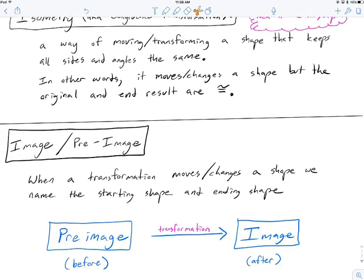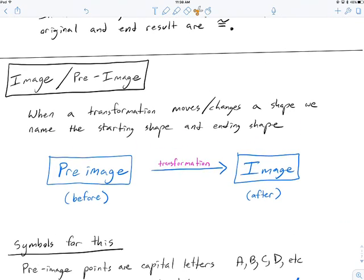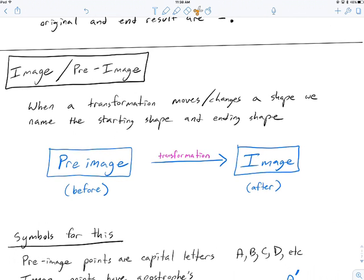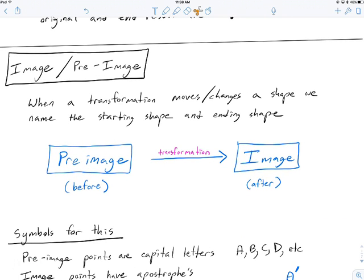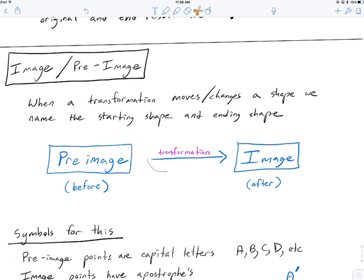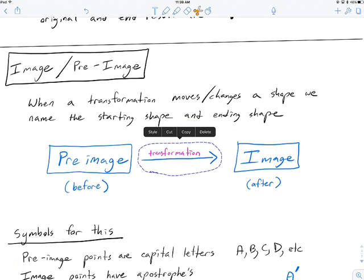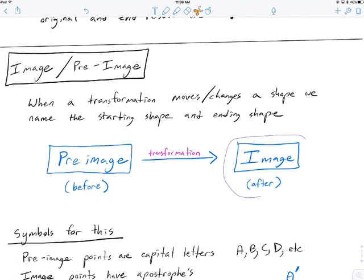Another important piece of vocab is the image and pre-image. The image is what happens after — it's the end result. The pre-image is the original figure. We start with a pre-image — whatever shape on a coordinate plane, a triangle, trapezoid, some polygon — then we do some transformation with it. Today we're talking about translating, so we do a transformation, and at the end we get an image.